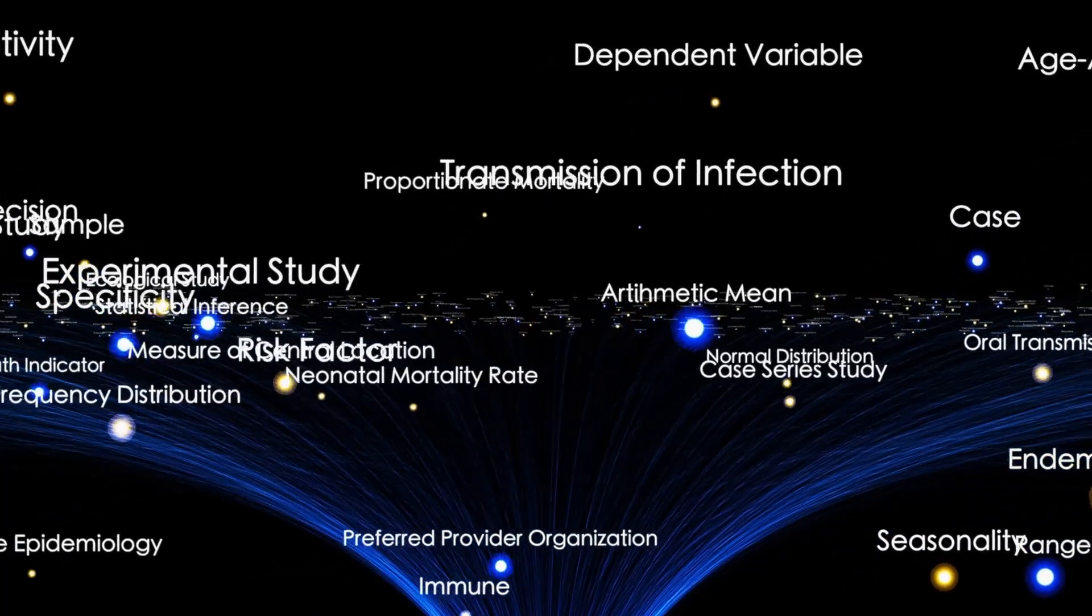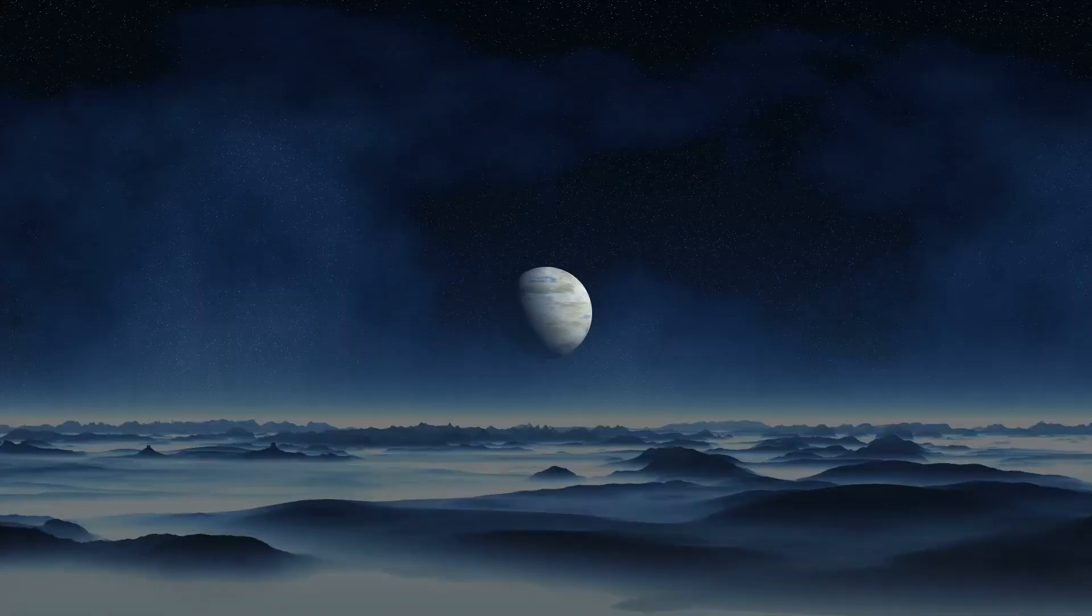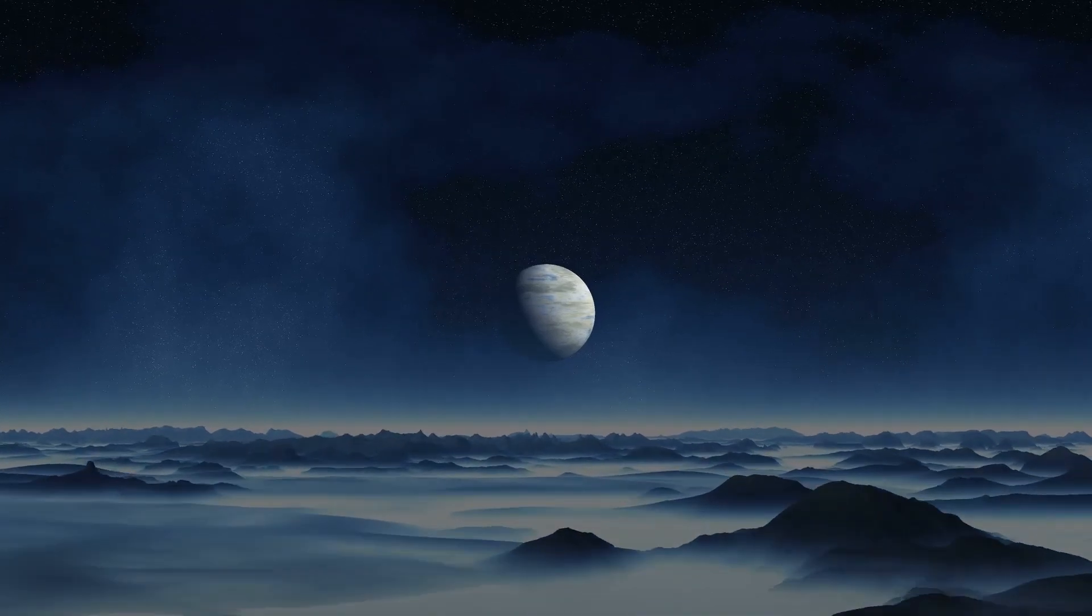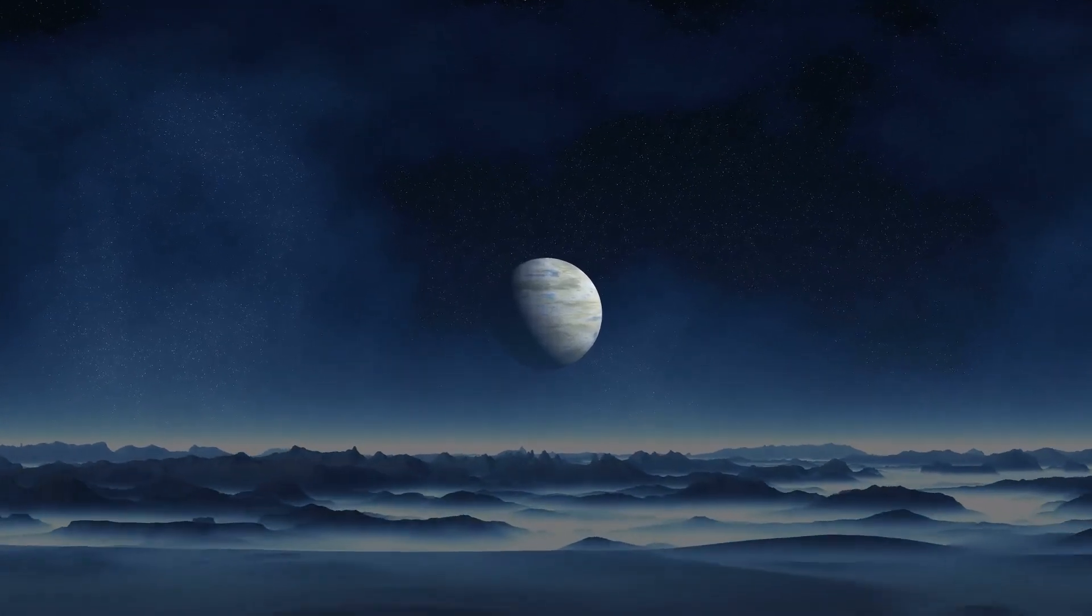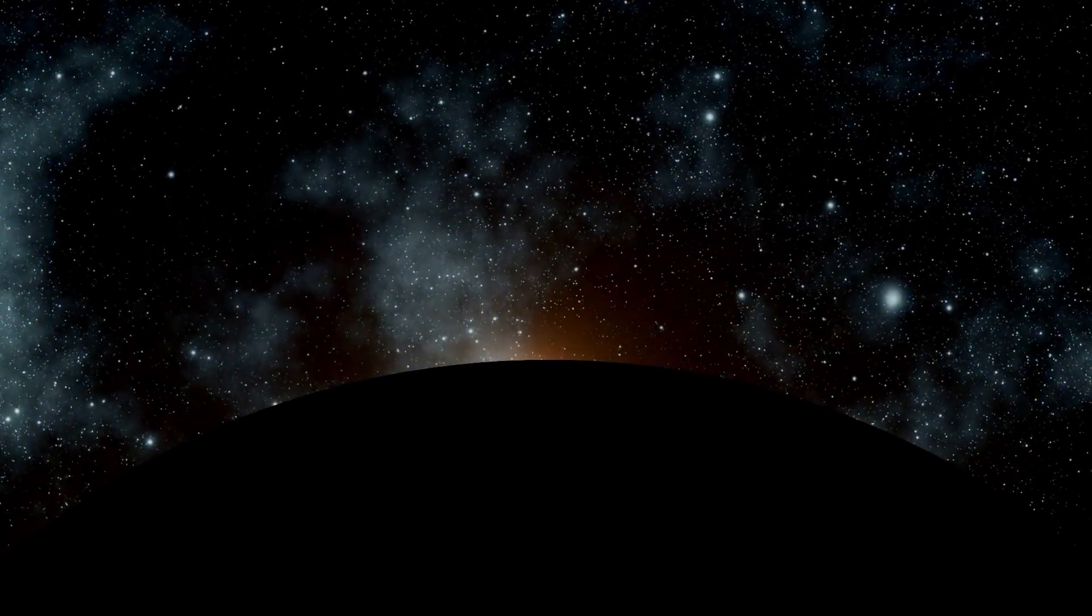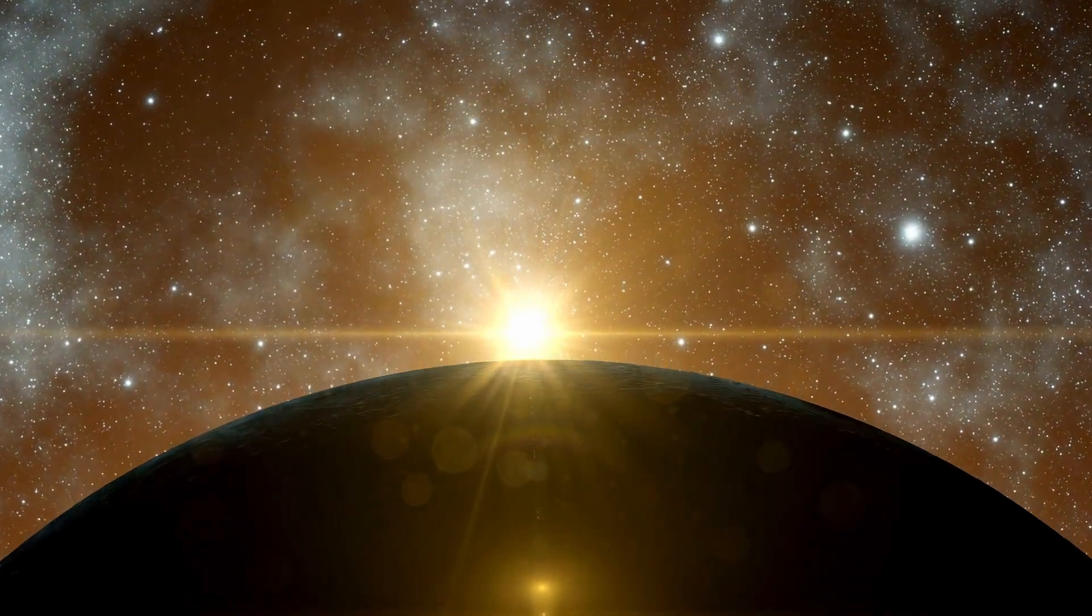This once hypothetical world, discovered in 2016 using radial velocity methods, was always compelling because of its mass—approximately 1.2 times that of Earth—and its potential rocky composition. But what truly set it apart was its orbit, just 0.05 astronomical units from its star, a mere tenth the distance between Mercury and our Sun. And yet, thanks to the much lower luminosity of Proxima Centauri, the planet falls comfortably within the habitable zone.